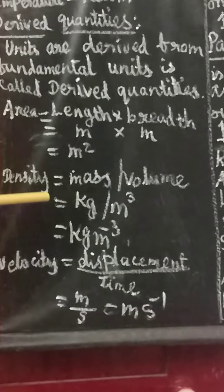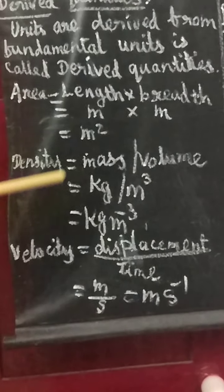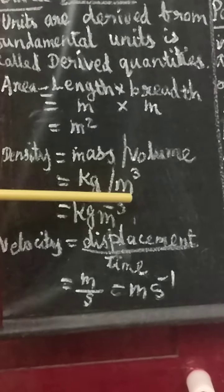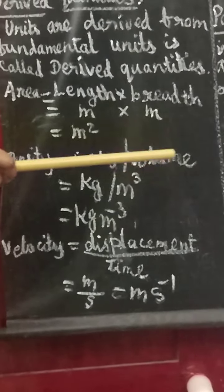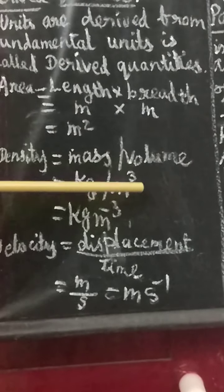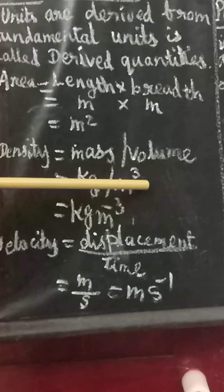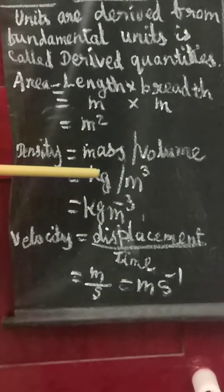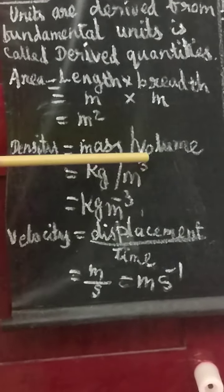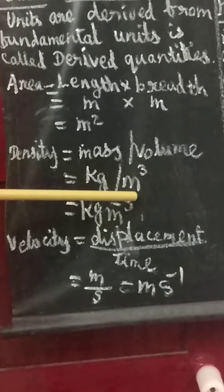Next, density. The formula for density is mass divided by volume. The unit of mass is kilogram. Volume equals length × breadth × height, which is meter × meter × meter = meter cubed. So the unit of density is kilogram per meter cubed, otherwise written as kilogram meter to the minus 3.